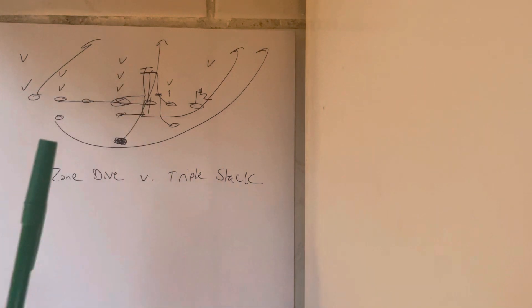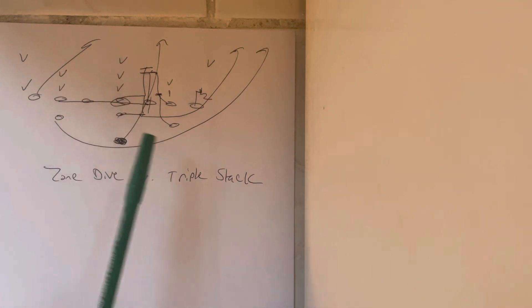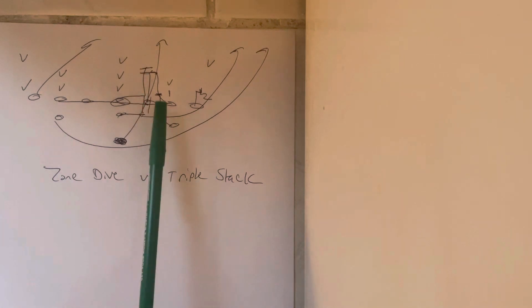The A-back wedges with the right hip of the tackle and two-hand slams whoever shows. If they easy stunt into it, he picks up the easy stunt with two hands. If number one comes down inside to take the dive, he two-hand slams him. Otherwise, he'll end up on the second to third level.